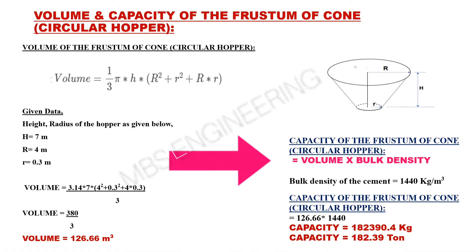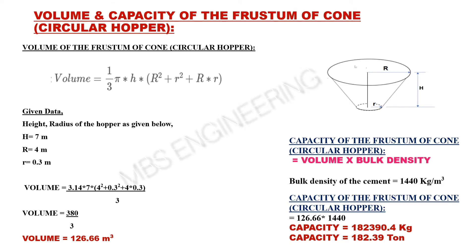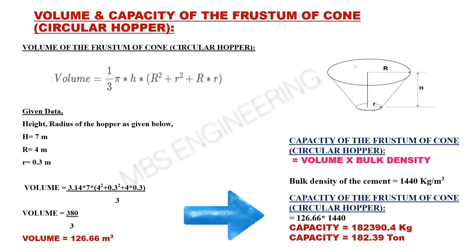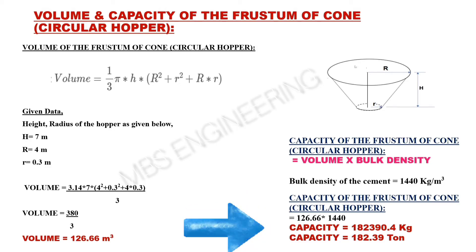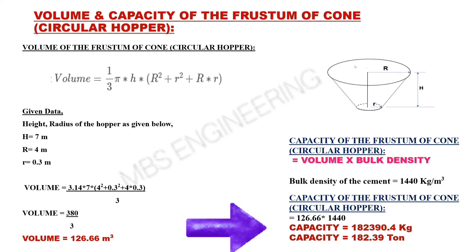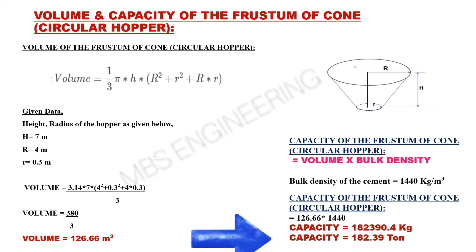Next, we learn about how to calculate the capacity of the frustum of cone or circular hopper. Volume is multiplied by bulk density. Assuming the bulk density of cement is 1,440 kilograms per cubic meter, 126.66 multiplied by 1,440. The frustum of cone or circular hopper has a capacity of 1,82,390.4 kilograms, or 182.39 tons.